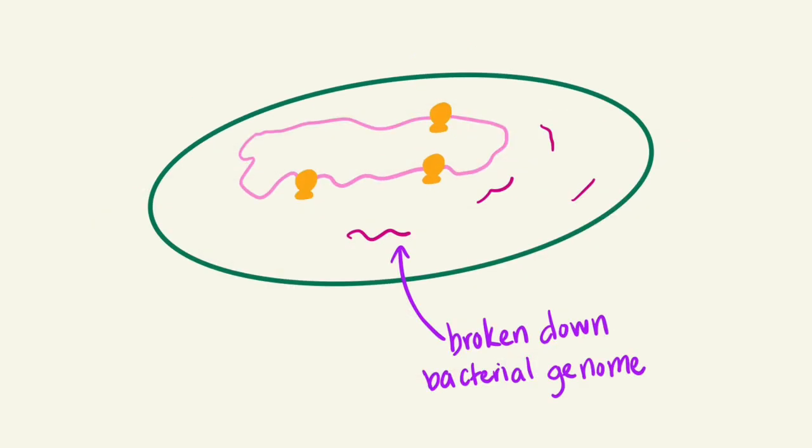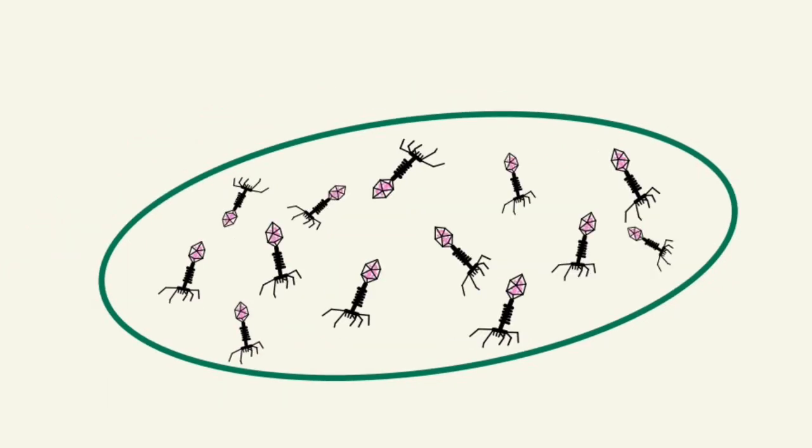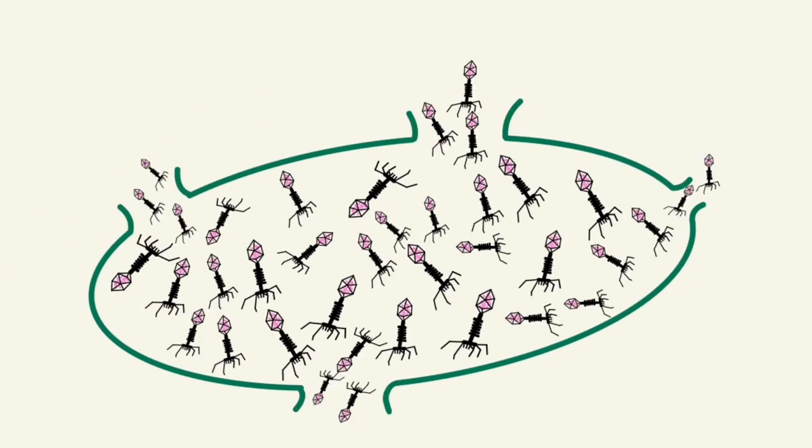This will then trigger the breakdown of the bacterial genome. With only the viral DNA remaining, the machinery of the bacteria will follow the orders of the viral DNA, creating more and more phages until the bacteria bursts.